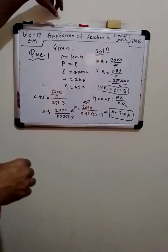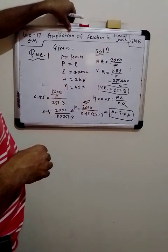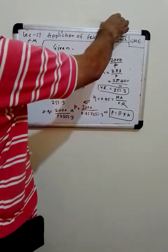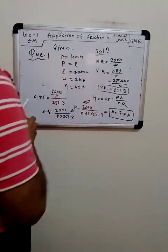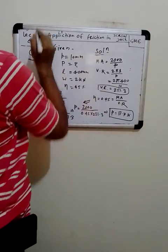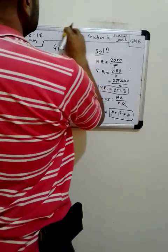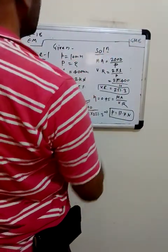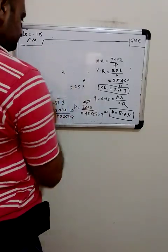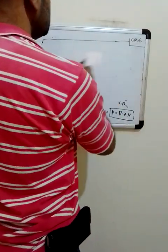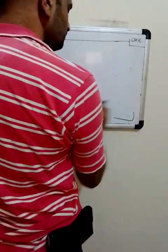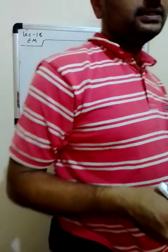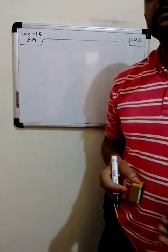In continuation with the application of friction, today we will see friction clutches — how friction is used in clutches. This is the 18th class. There are two theories in clutches: one is the uniform pressure theory and the other is the uniform wear theory. Both theories will be covered in today's lecture, and the same concept is also used in the theory of machines.